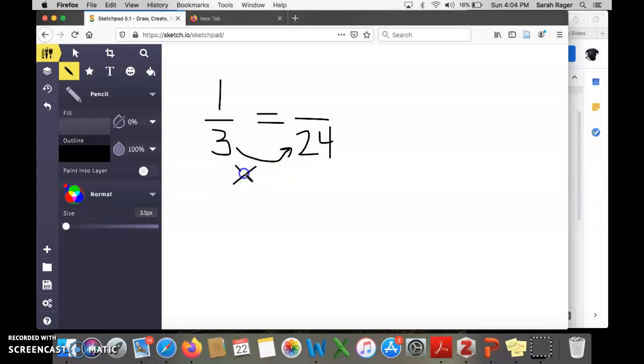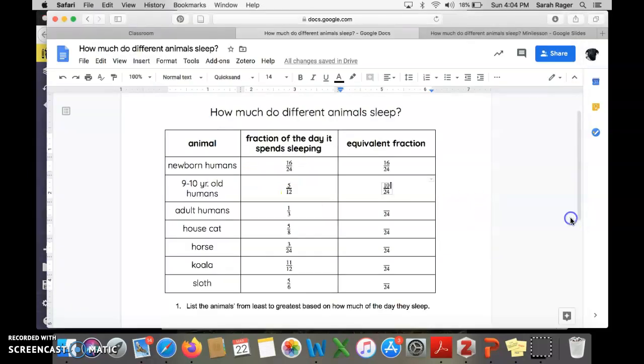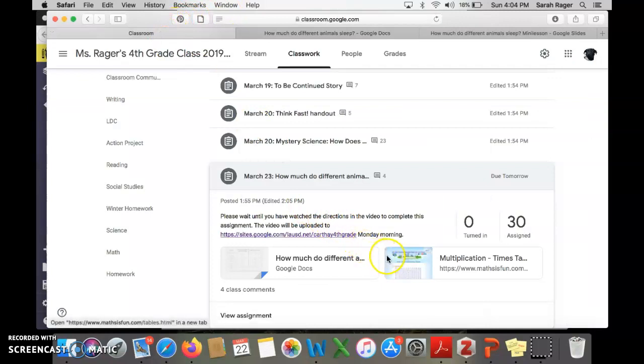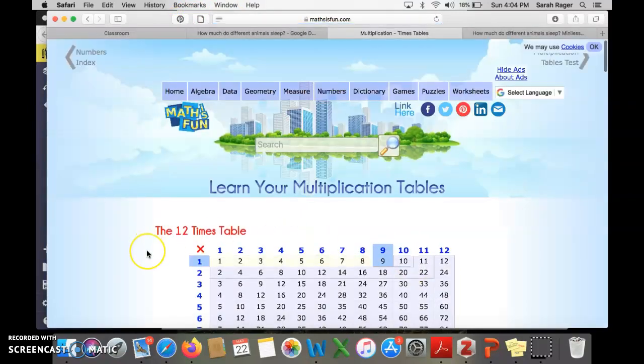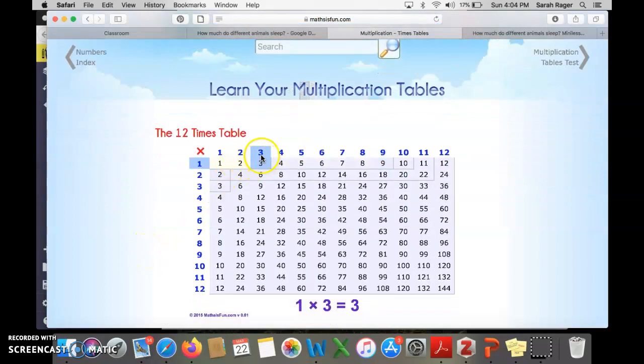3 times what equals 24? Let me draw my arrow. I know I'm multiplying, but let's check our times table chart to see how much I need. I uploaded a link in your assignment. 3 times something gives me a product of 24. Let me go down until I get to 24. There it is. Ah! 3 times 8. Right there.